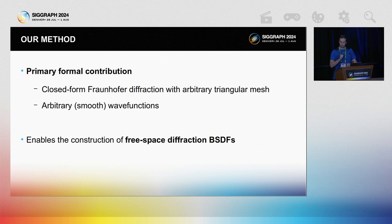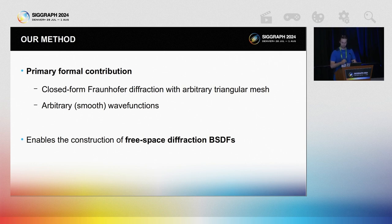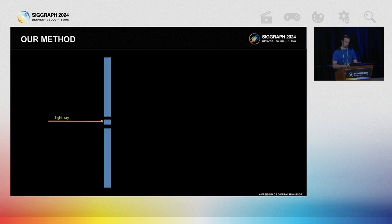In order to put this idea into practice, our primary theoretical contribution is a derivation of a closed-form expression for the diffraction by a triangular mesh. This enables us to dynamically construct on the fly a free space diffraction BSDF in closed form for any diffracting geometry. We also derive an expression for the probability density and an importance sampling strategy that can also be applied dynamically to the constructed BSDF.